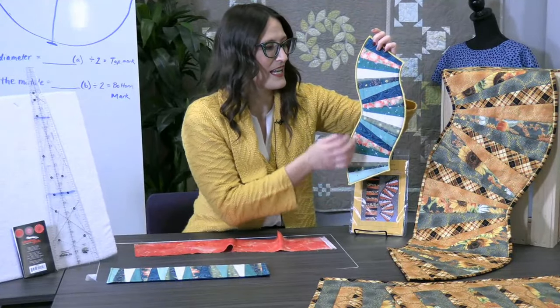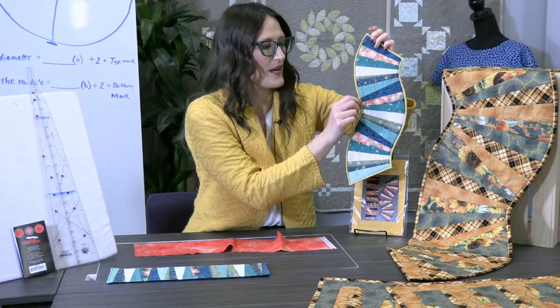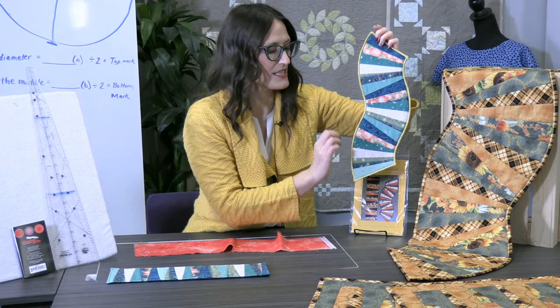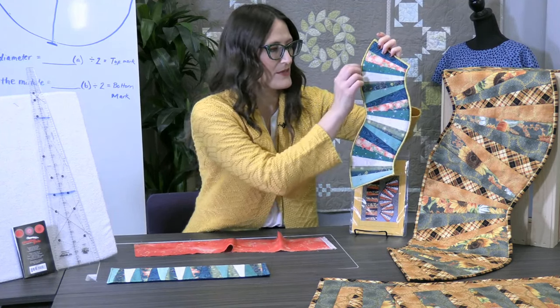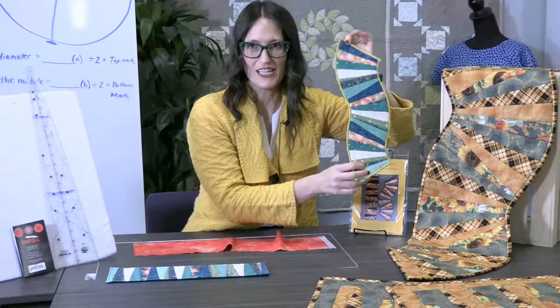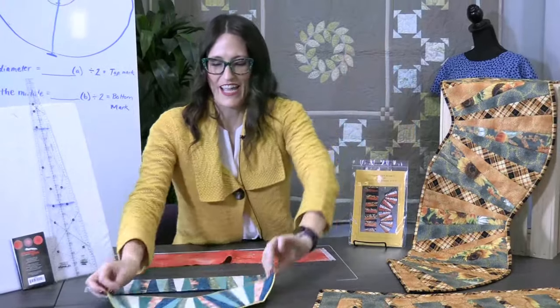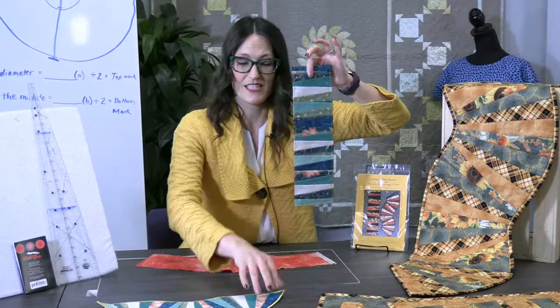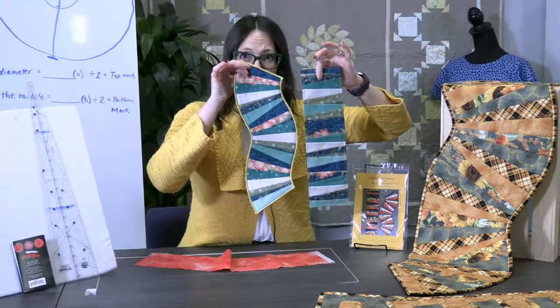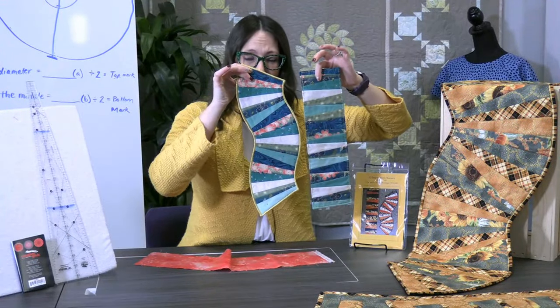Gail made this one and she did gold thread edging on here. She satin stitched the edges a couple of times to get that nice thick sparkly edge, super cute. And then you can see here she also did the same thing, these are the same wedge sizes as this one but she just did them every other one.